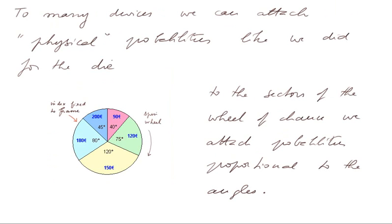To many devices, we can attach physical probabilities like we did for the die. For example, here is the wheel of chance that I've already described. To the sectors of the wheel of chance, we can attach probabilities proportional to the angles. It's a simple consequence of equiprobabilities. Think of the disk split into 360 angles of one degree — these sectors correspond to just groups of elementary angles of one degree.